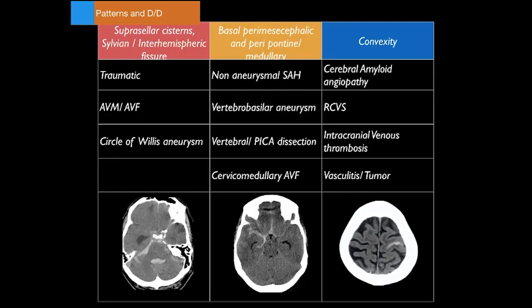Based on the pattern of subarachnoid bleed, we can reach a few differential diagnoses. There are three main patterns. Pattern one: subarachnoid blood primarily along the suprasellar cisterns, sylvian fissures, and interhemispheric fissures. This is the most common pattern seen with traumatic subarachnoid blood and circle of Willis aneurysm rupture.